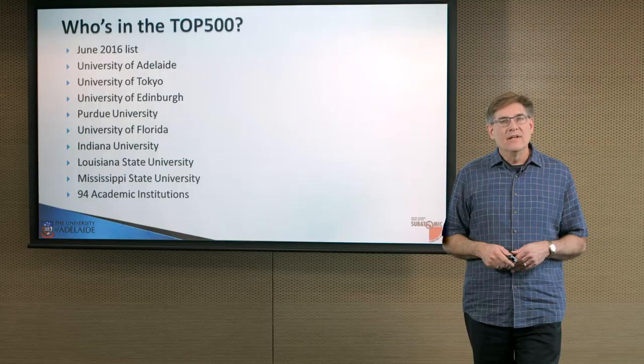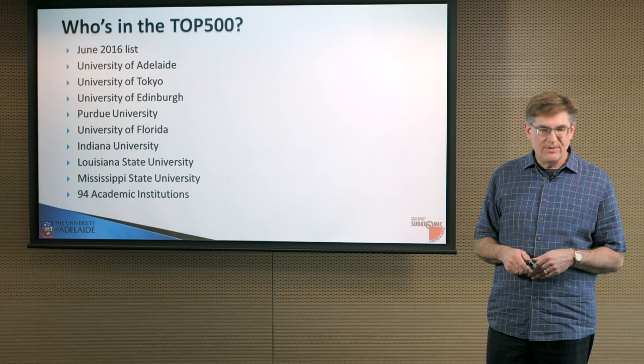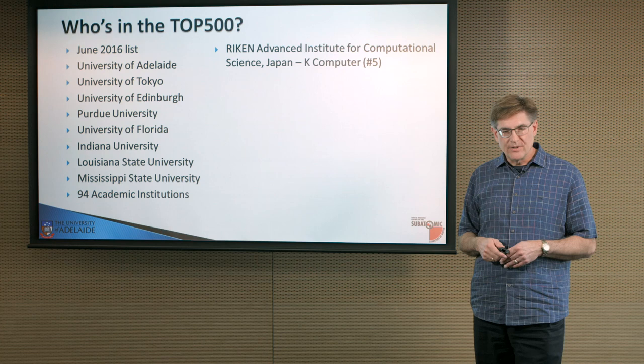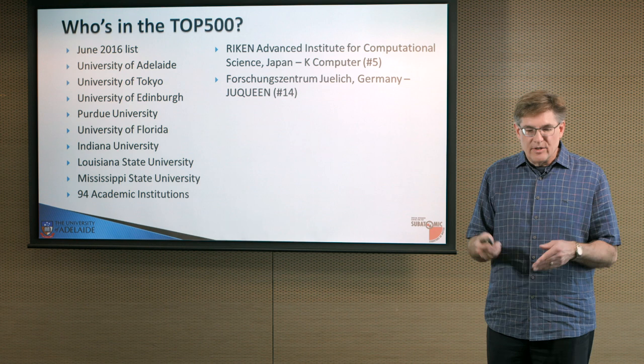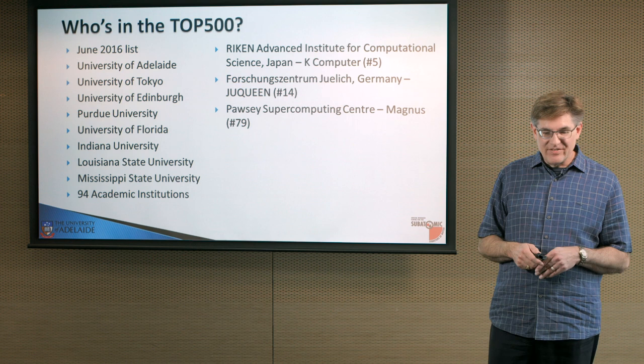You'll also find some real powerhouse research institutes like Riken with number five in the list. Julich with the Jew Queen at 14. Now, POSI comes in at 79 with Magnus. And Riken's there from the NCI at 99. And Victorian Life Sciences Computation Initiative is also there.